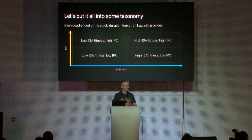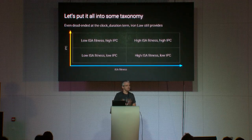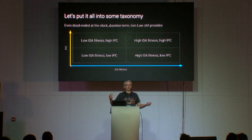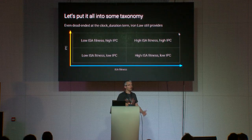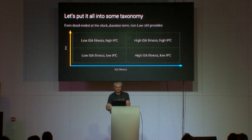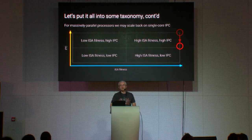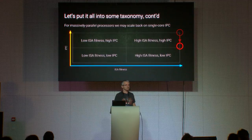If we plot ISA fitness on the horizontal axis against instructions per clock on the vertical axis, we see that at the origin we have near-zero performance, and at the opposite end of the spectrum we have optimal performance for sequential programming. For massively parallel architectures, it perhaps makes sense to slightly scale down instructions per clock — since simpler cores allow more of them on a single die — trading instruction-level parallelism for better task-level parallelism, potentially achieving a net benefit.